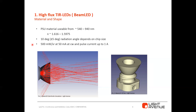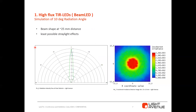This LED has 500 mW at 50 mA at CW and pulse current up to 1 A depending on the wavelength — not all wavelengths, but most. Looking at the simulation of the 10-degree radiation angle, you can see in picture 6 the radiation intensity view of the polar detector. We can see the really low stray light and the good beam shape, with a radiation angle of ±5 degrees. On the right side, we have the incoherent irradiance detector image.